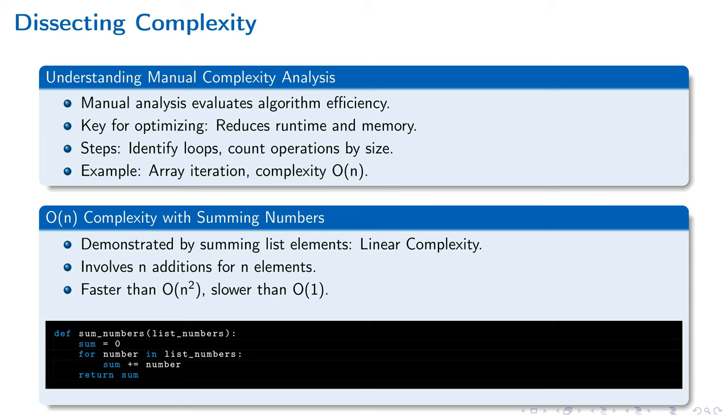Advancing our insight into the intricacies of computing efficiency, we now delve into manual complexity analysis. This pivotal method enables the evaluation of an algorithm's handling of key resources: time and space. Identifying loops and operation counts based on the scale of input illuminates an algorithm's complexity classification. Through a Python illustration of summing numbers in a list, demonstrating linear, or O(n), complexity, we see operations grow with list length. This sum numbers function iterates over each item, totaling values, showcasing O(n)'s characteristics. This exploration strengthens understanding of how input size affects execution speed, highlighting the significance of complexity in algorithm performance.